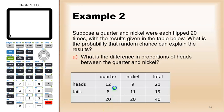For the quarter, there were 12 heads out of 20. For the nickel, there were 9 heads out of 20. So the difference of proportions would be 12 out of 20 minus 9 out of 20, which is 3 out of 20 or 15%.